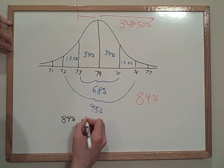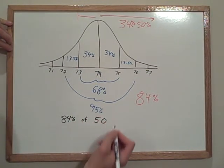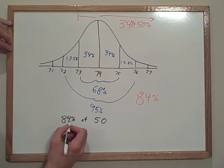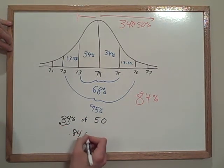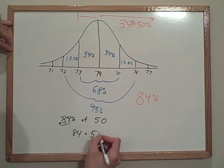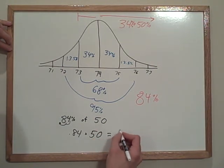So 84% of the team, and there are 50 people on the team, so 84% of 50. Well, let's turn this into a decimal, so we'll move the decimal over two places: 0.84. Of, in case you never knew that, 'of' means times. 0.84 times 50.